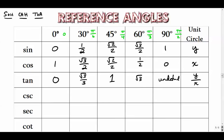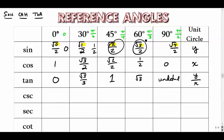Here's a useful pattern for memorizing the sine values: radical 0 over 2, radical 1 over 2, radical 2 over 2, radical 3 over 2, radical 4 over 2 — just 0, 1, 2, 3, 4 under the radical. Simplified: 0, one half, radical 2 over 2, radical 3 over 2, and 1. The cosine values go in the exact opposite order — descending 4, 3, 2, 1, 0 — giving the same set of values in reverse.